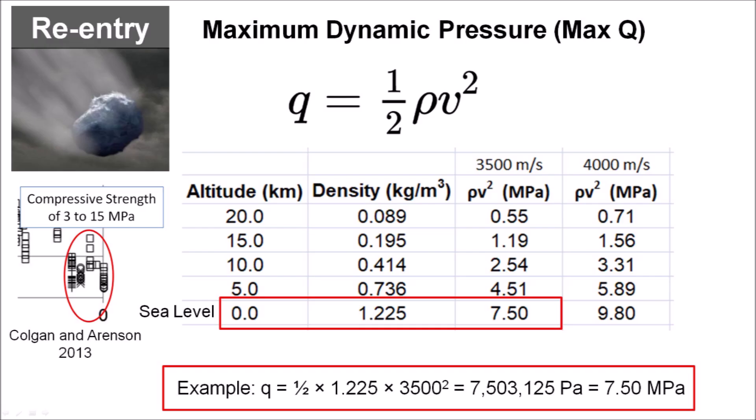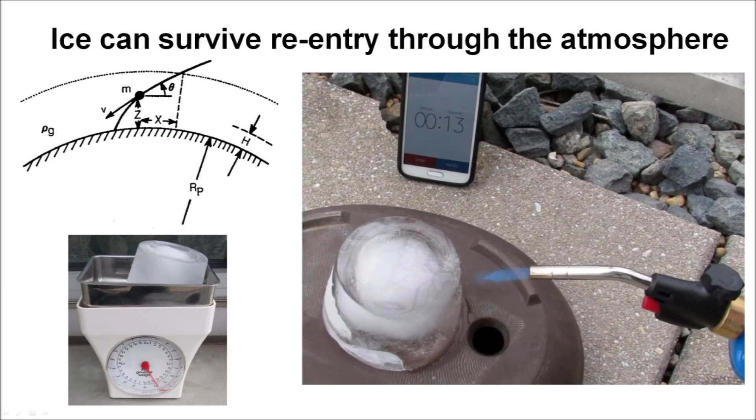Some weak ice boulders with a compressive strength of 3 MPa could have fragmented at an altitude of 5 km above the surface during reentry, but at a speed of 3.5 km per second, the pieces would have hit the ground 1.4 seconds after the fragmentation. Ice projectiles reentering the atmosphere at 3-4 km per second and at an angle of 35 degrees would have spent 43-58 seconds traversing the atmosphere.